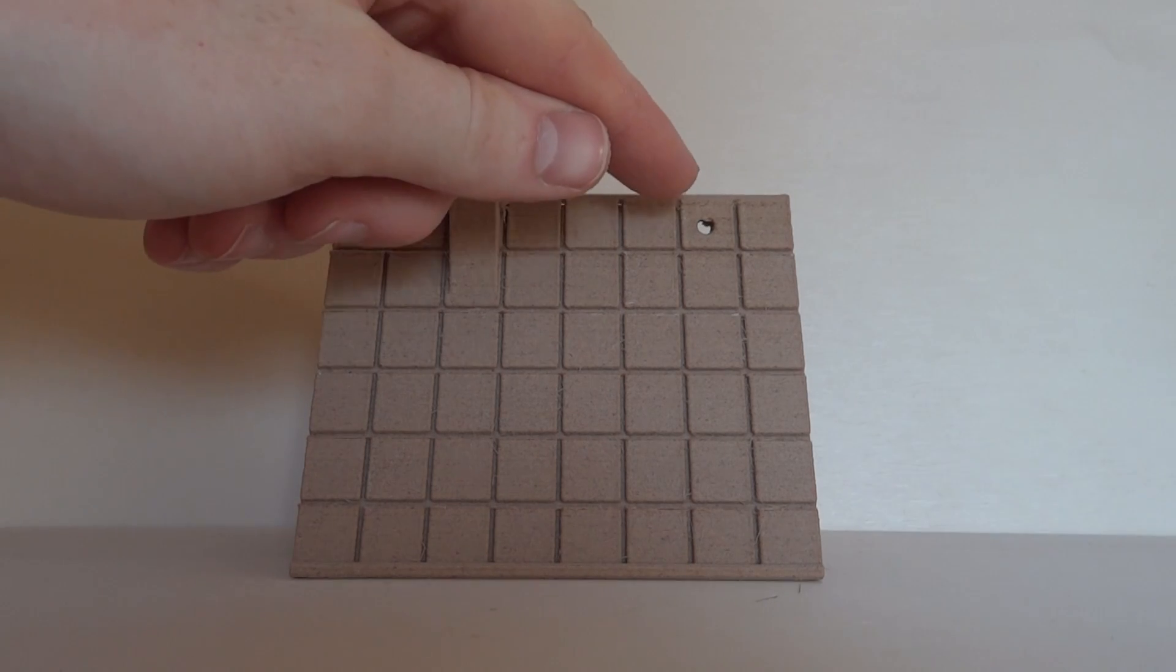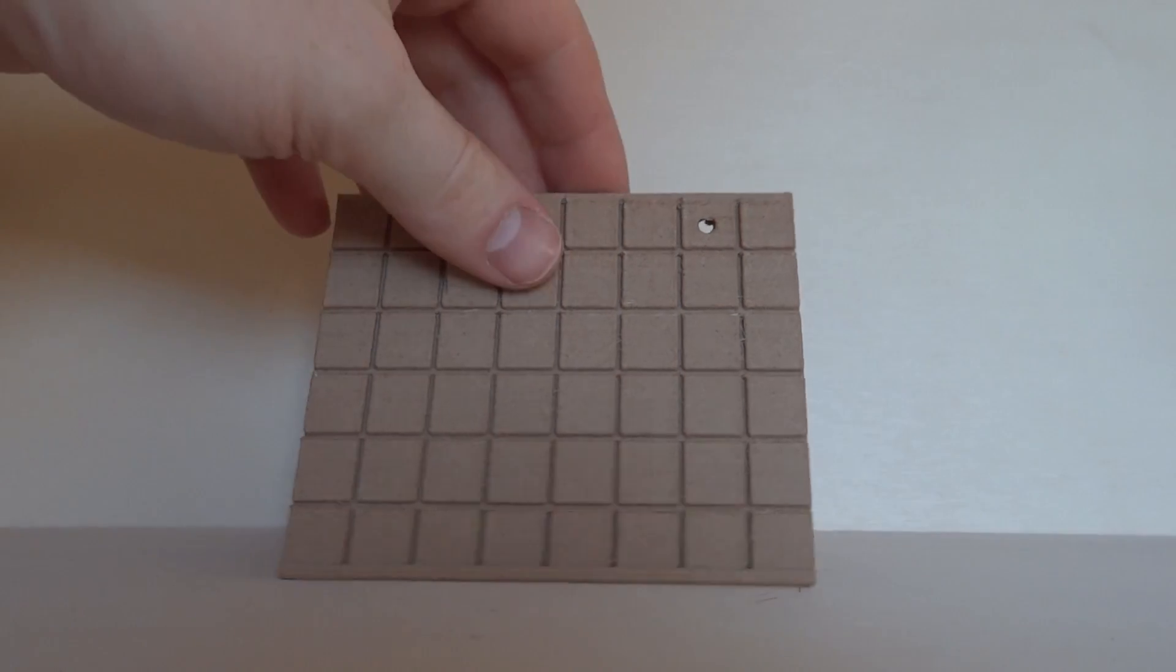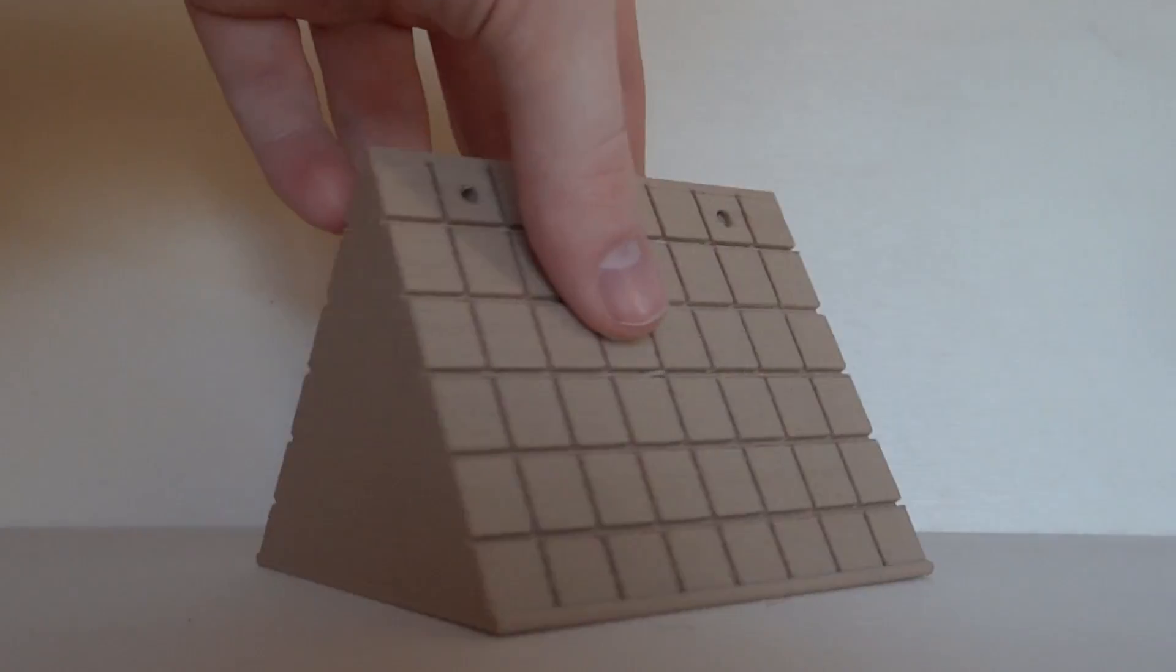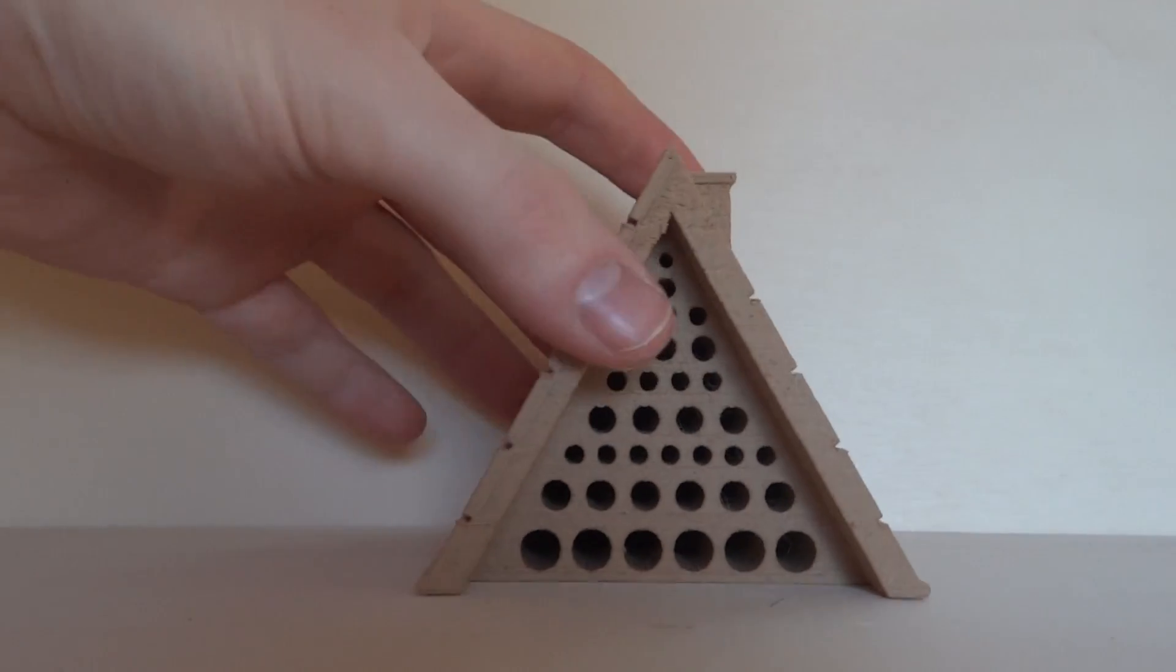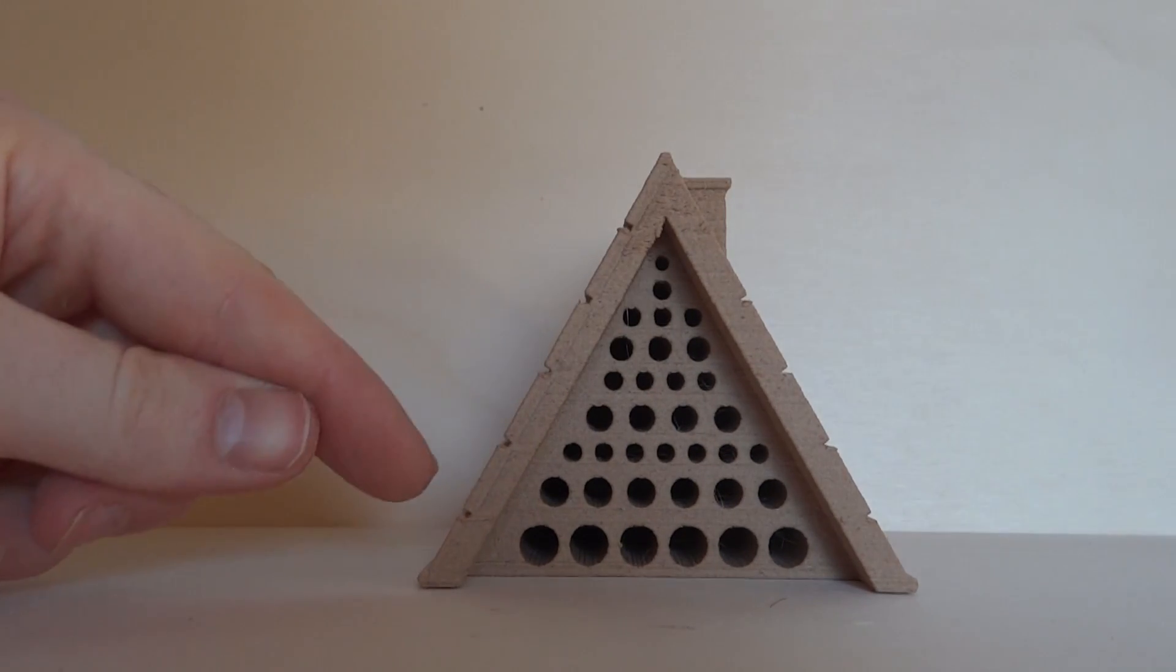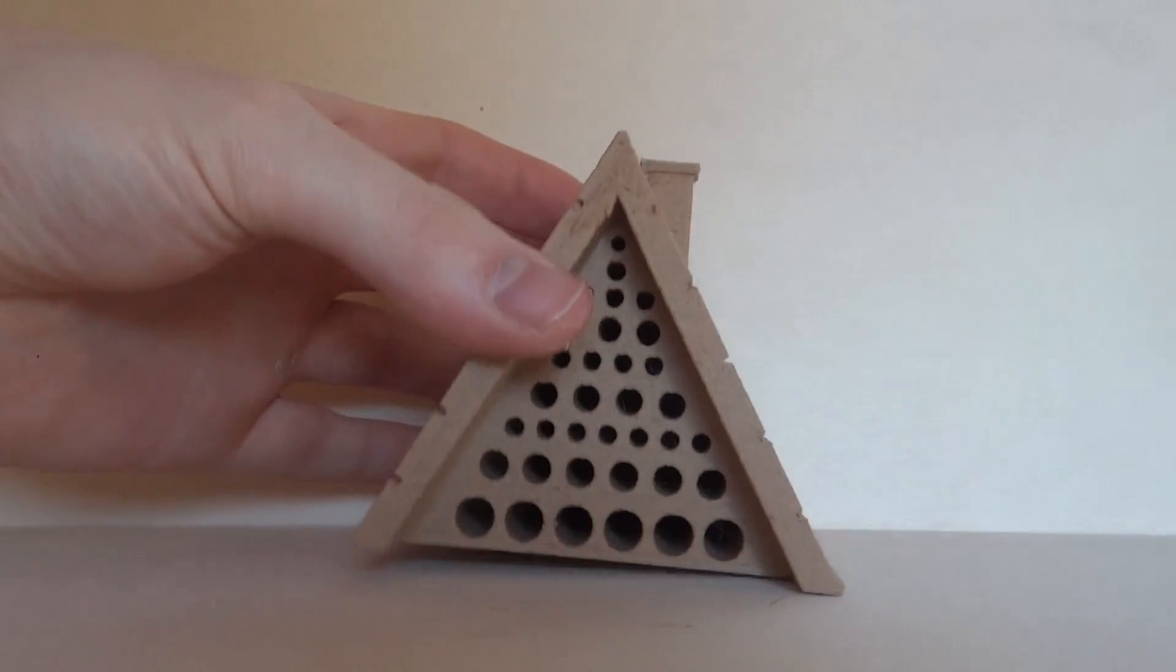By printing insect hotels out of 100% wood filament, anyone willing can save insects from disappearing from their area. Providing breeding ground for wild bees is one key component of saving these precious animals.